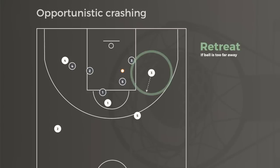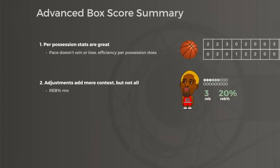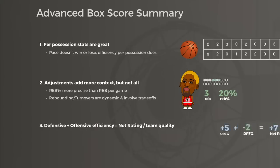Later in the series, we'll see how we can refine rebounding value even more. The takeaways from part three: basketball is a possession-based game, so per-possession stats almost always describe teams and players most accurately. Other adjustments add context — rebounding percentage is more precise than rebounds per 100, but rebounding is complex and dynamic. Finally, a team's net rating combines offensive and defensive efficiency and almost perfectly describes its effectiveness. To predict future performance, don't look at win percentage — look at margin of victory.